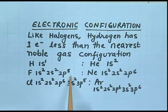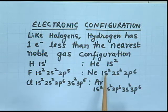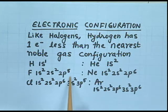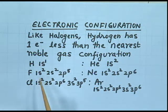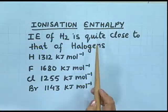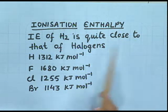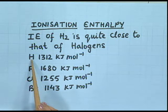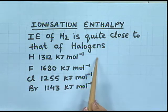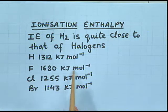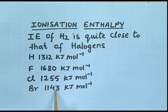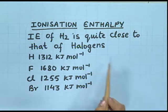Fluorine, a halogen, has electronic configuration 1s2, 2s2, 2p5. Its nearest noble gas is neon with configuration 1s2, 2s2, 2p6 — fluorine is just one electron less than neon. Similarly, chlorine is one electron less than argon, the nearest noble gas. Ionization enthalpy: the ionization enthalpy of hydrogen (1312 kJ/mol) is quite close to that of halogens — fluorine is 1680 kJ/mol, chlorine 1255 kJ/mol, and bromine 1143 kJ/mol. All these values are quite comparable.